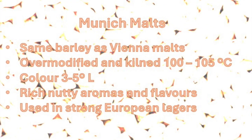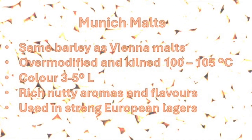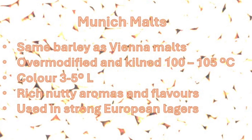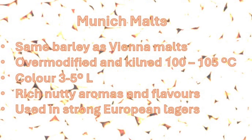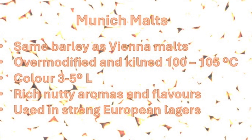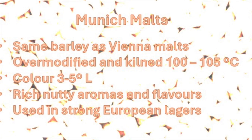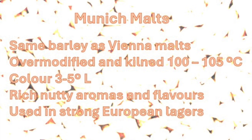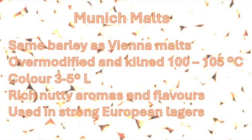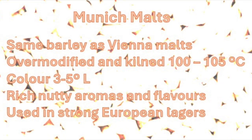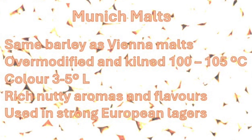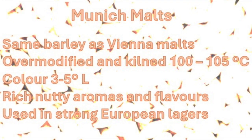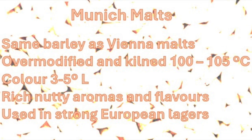Munich malts can be produced from the same barley as Vienna malts but are slightly over-modified. The final kilning temperatures are between 100 and 105°C, or 212 to 220°F. Malt color is between three and five Lovibond. They are characterized by rich nutty aromas and flavors, and are used for brewing strong, full-bodied, and somewhat darker lagers.